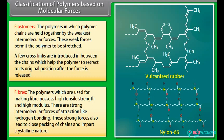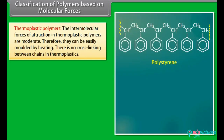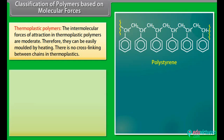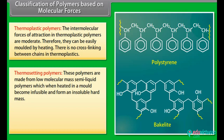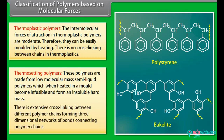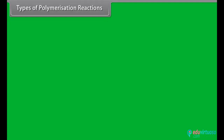For example, Nylon-66. Thermoplastic polymers: the intermolecular forces of attraction in thermoplastic polymers are moderate. Therefore, they can be easily molded by heating. There is no crosslinking between chains in thermoplastics. For example, polyethylene and polystyrene. Thermosetting polymers: these polymers are made from low molecular mass semi-liquid polymers which, when heated in a mold, become infusible and form an insoluble hard mass. There is extensive crosslinking between different polymer chains forming three-dimensional networks of bonds connecting polymer chains. For example, bakelite.